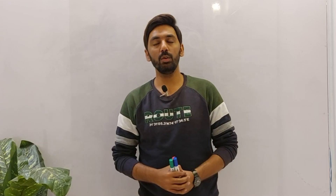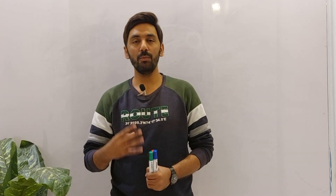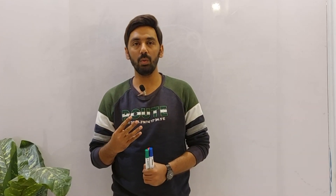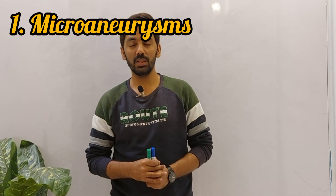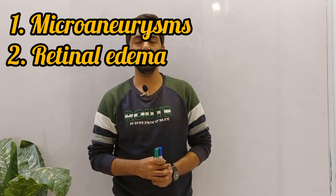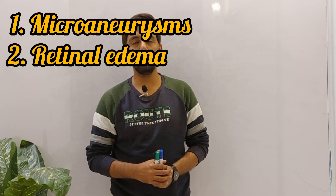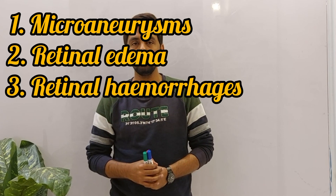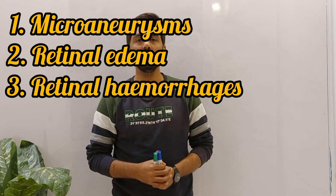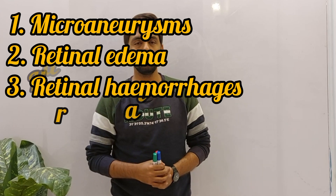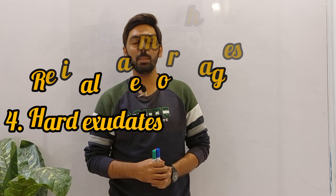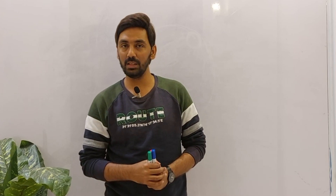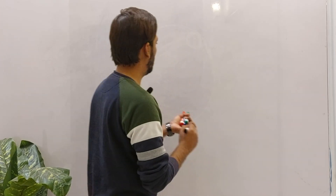In background diabetic retinopathy, there are four major signs. The first sign is microaneurysms, the second is retinal edema, the third is retinal hemorrhages, and the fourth is hard exudates. We will discuss the pathophysiology of each of these signs one by one.